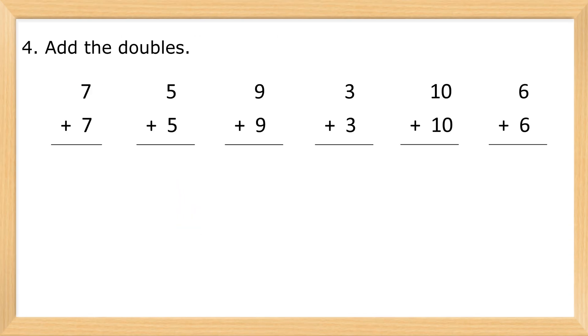4. Add the doubles. 7 plus 7 equals 14. 5 plus 5 equals 10. 9 plus 9 equals 18. 3 plus 3 equals 6. 10 plus 10 equals 20. 6 plus 6 equals 12.